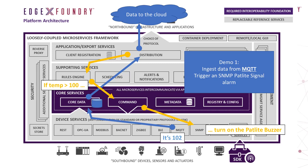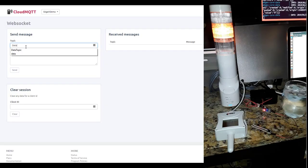I can use these sensors to detect my environment and trigger the pat light to give me a visual indication of what's happening. In this first demo, I'll put data through the MQTT topic connected to EdgeX via the MQTT device service. The MQTT device service allows EdgeX to receive and act on data from a variety of systems or devices. If EdgeX sees a value of over 100 degrees coming from the MQTT device service, it will trigger the pat light's buzzer alarm. Let's watch.